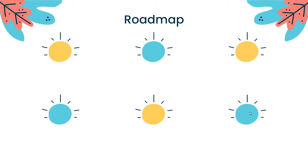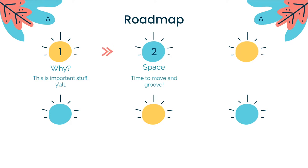Where are we going today? First, we're talking about why it's important to design an effective classroom. Next, we're moving to the space — what does the physical space actually look like where we can utilize the classroom with students for learning? Then number three, we're moving to walls, these visuals that surround us. How can we have them be decorations? How can we have them be teachable moments? What's a good balance? What should we put on our walls?